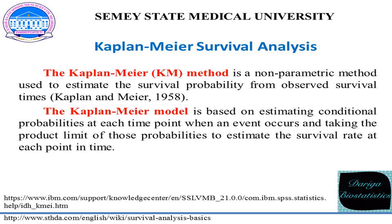The Kaplan-Meier method is a non-parametric method used to estimate the survival probability from observed survival times. There are many situations in which you would want to examine the distribution of times between two events. The Kaplan-Meier model is based on estimating conditional probabilities at each time point when an event occurs, and taking the product limit of those probabilities to estimate the survival rate at each point in time.